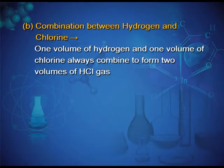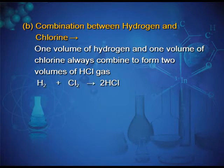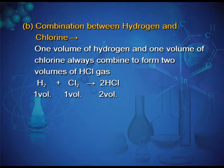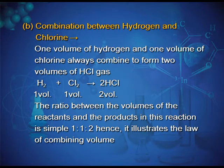Another example is the combination of hydrogen and chlorine: 1 volume of hydrogen and 1 volume of chlorine always combine to form 2 volumes of HCl gas — H₂ + Cl₂ → 2HCl. The ratio between the volumes of reactants and products is 1:1:2, illustrating the law of combining volumes.